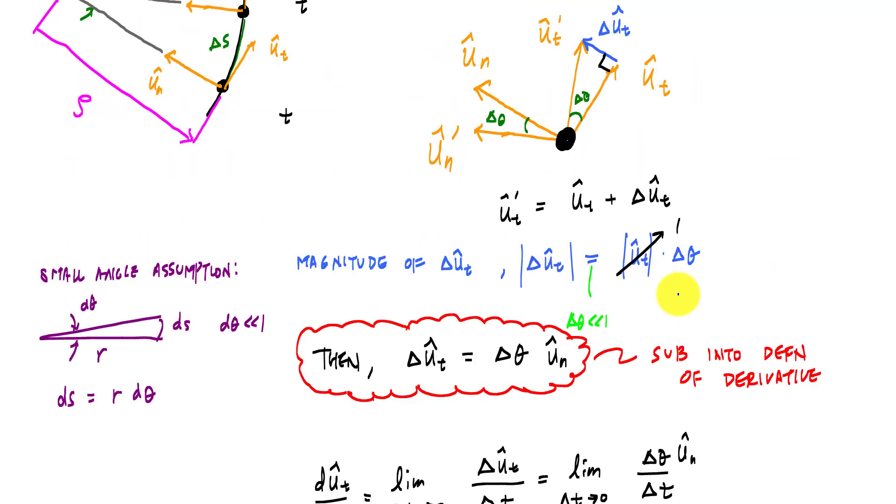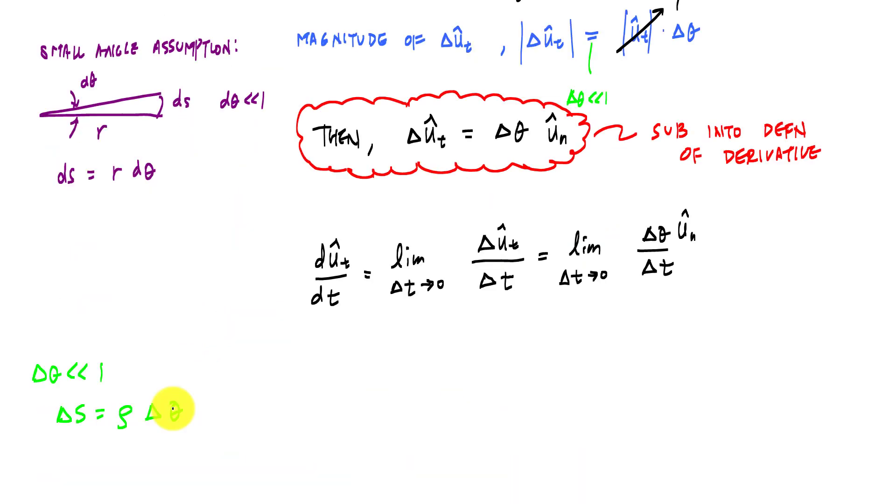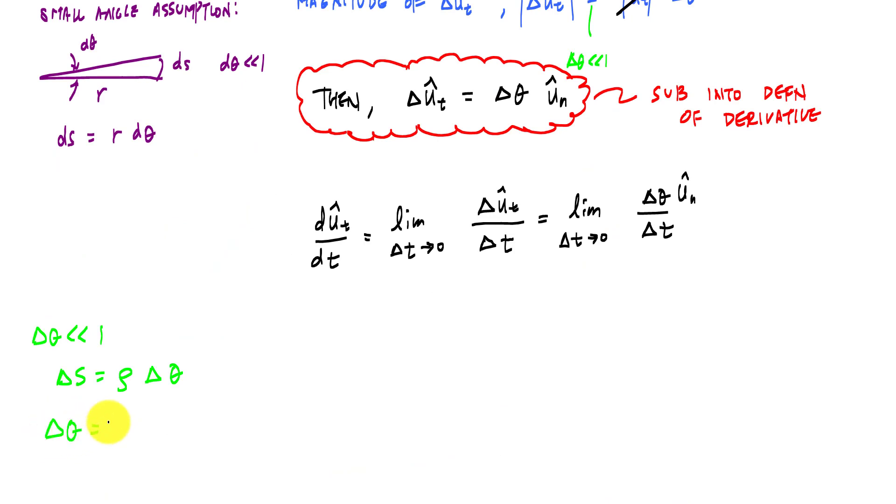And if delta theta here, check this out - if delta theta is very small as well, then we can say that delta s is equal to rho times delta theta. That looks even better. And that means if I rearrange this and I say delta theta is delta s over rho, and now I substitute this into the definition of the derivative,